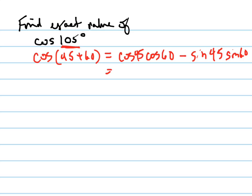This equals root 2 over 2 - think of your unit circle - the cosine of 60 is 1 half, minus the sine of 45 which is root 2 over 2, times the sine of 60 which is root 3 over 2.